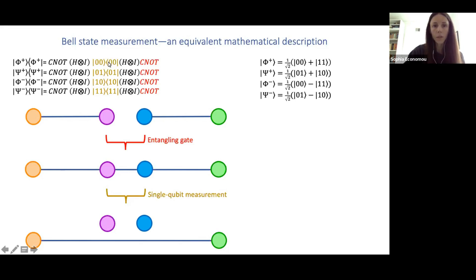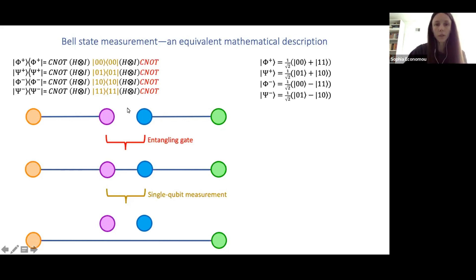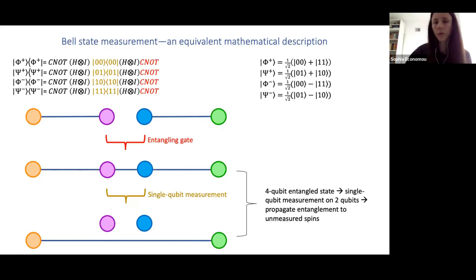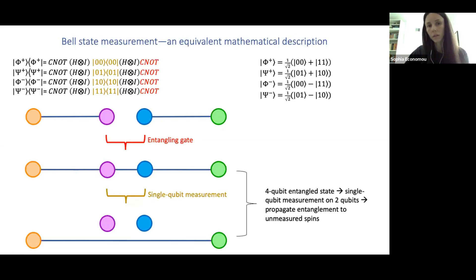Mathematically, you can view entanglement swapping as follows. You can map the projection onto each of the four Bell states using a CNOT and Hadamard, which convert the computational basis into the Bell basis. You can view the whole thing as an entangling gate followed by a single qubit measurement on each of the two qubits. Starting from a four-qubit entangled state, single qubit measurements on the middle qubits propagate entanglement out into the outer qubits, which were never directly entangled with a gate.